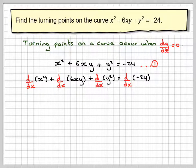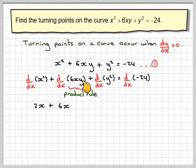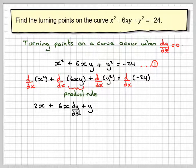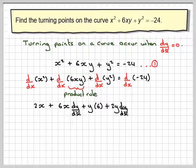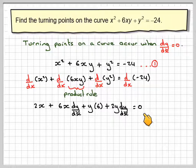This is going to give 2x, and now we're here, we're going to have to use the product rule. So we're going to have 6x and y as separate terms. So we have 6x, the differential of y with respect to x becomes dy by dx, plus y, and the differential of 6x becomes 6. The differential of this with respect to x becomes 2y dy by dx, and that's going to be equal to the differential of minus 24, which is 0. Don't forget to differentiate the last term.